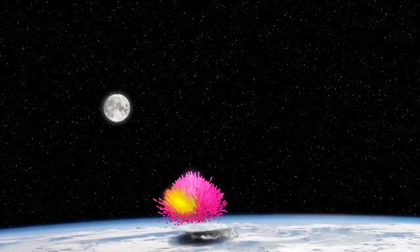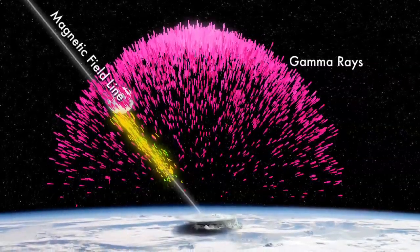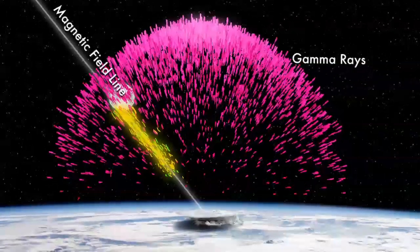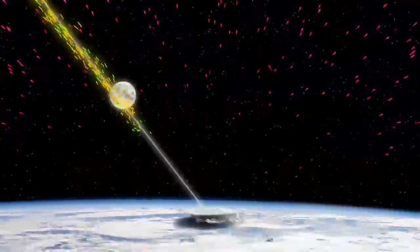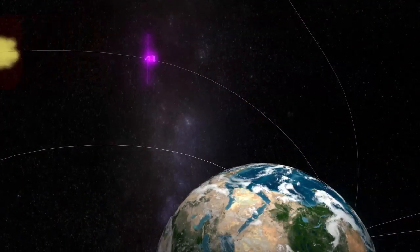The gamma rays travel in straight lines, but the charged particles spiral along lines of Earth's magnetic field. And that was the route to Fermi. The particles created by the TGF rode upward on magnetic field lines and then struck the spacecraft.